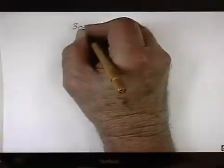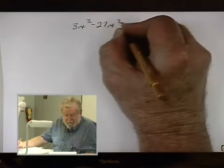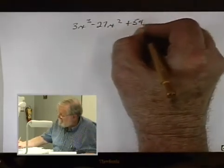Here's the factor. Here's the trinomial. 3x cubed minus 27x squared plus 54x.